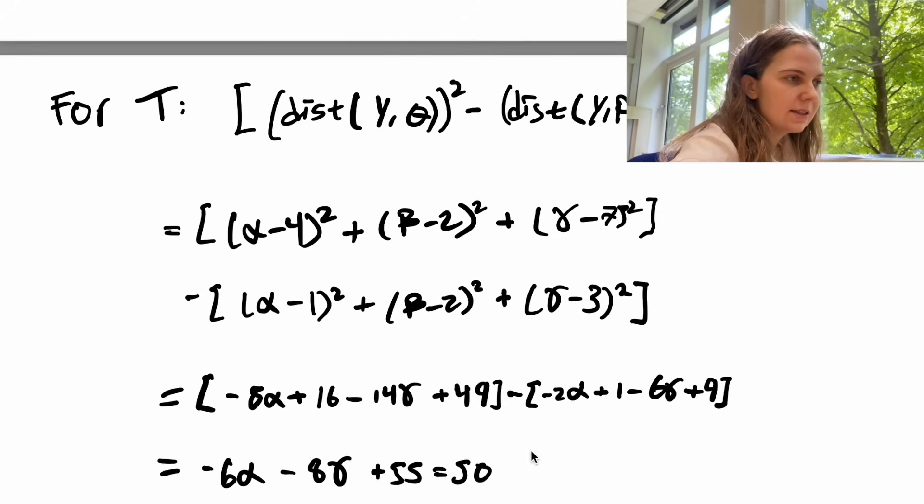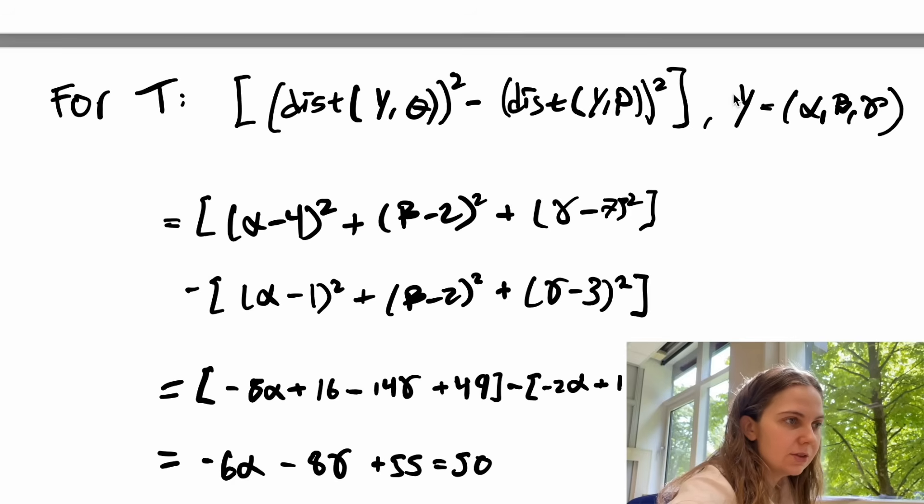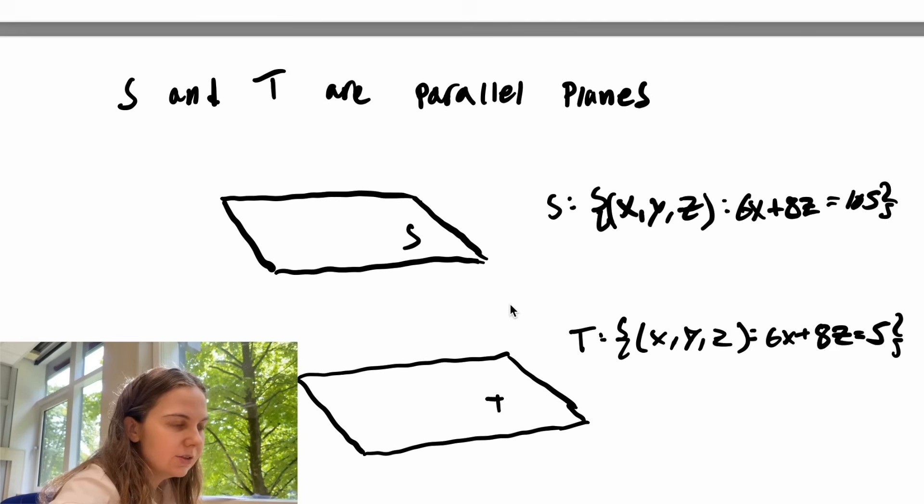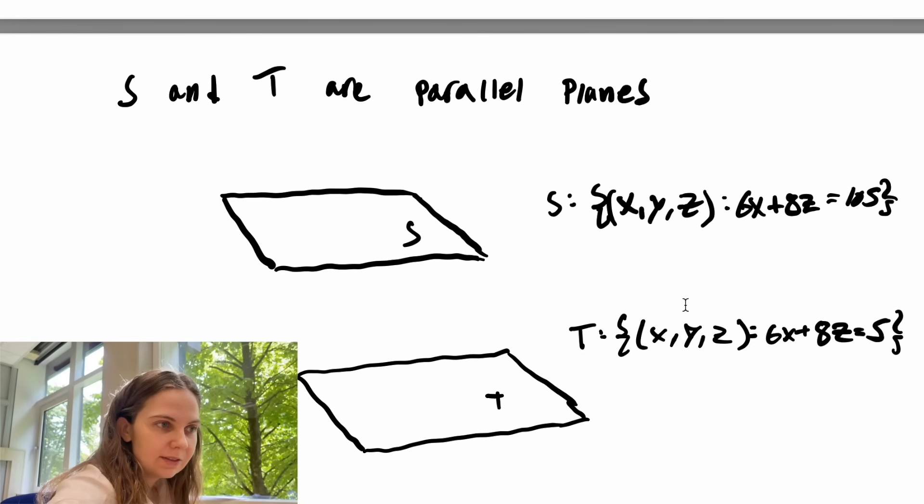So we can do a similar thing for T where we take some random point y that we denote with coordinates alpha, beta, gamma and we write down the difference between the distance squared between y and q and the distance squared between y and p. So as we saw previously once again these middle terms cancel, all the squares of alpha and gamma also cancel and we are left with minus 6 alpha minus 6 gamma plus 55 is again equal to 50. So we have obtained the equation for T which is 6x plus 8z is equal to 5. So if we compare the equations for S and T we notice something interesting which is that S and T are two planes and they both have the same normal vector 6x plus 8z which means that they are two parallel planes.